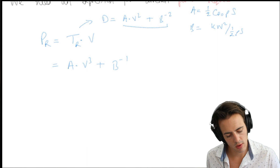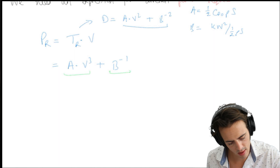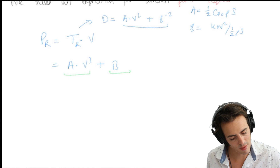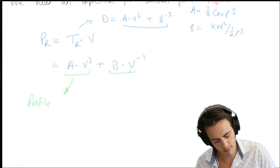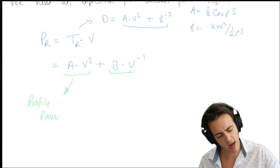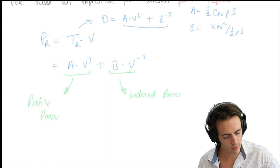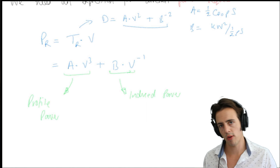This gives us two parts. We have profile power, which is the power associated with overcoming profile drag. And then we have induced power, which is the power associated with the work done to create those wingtip vortex structures.